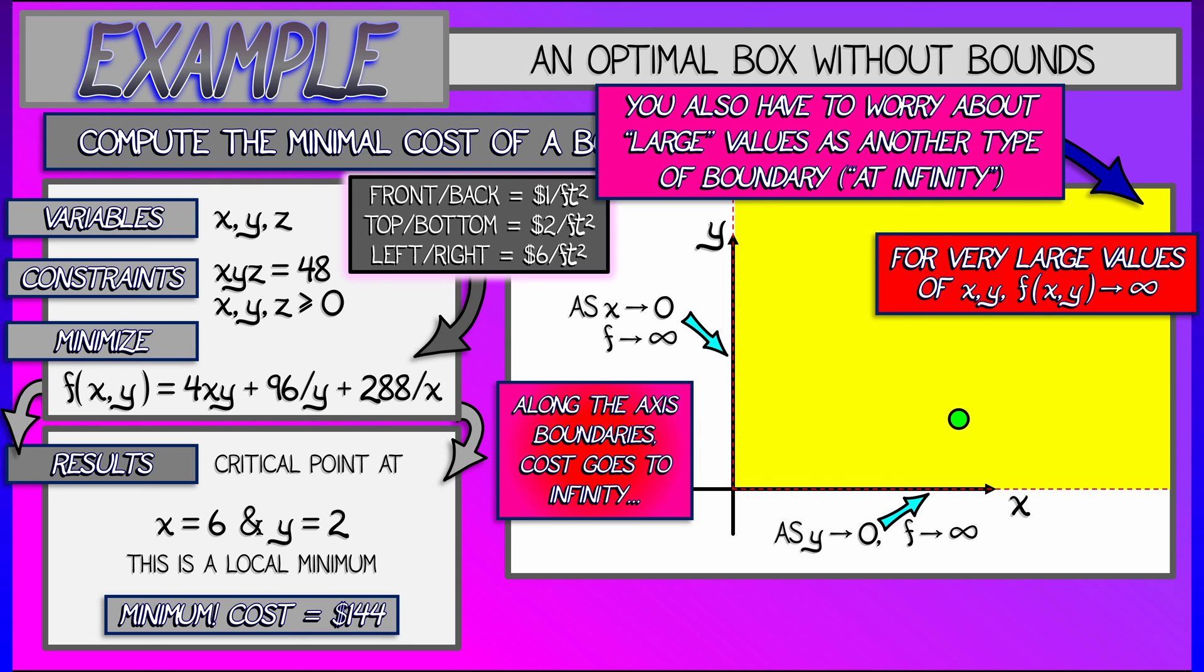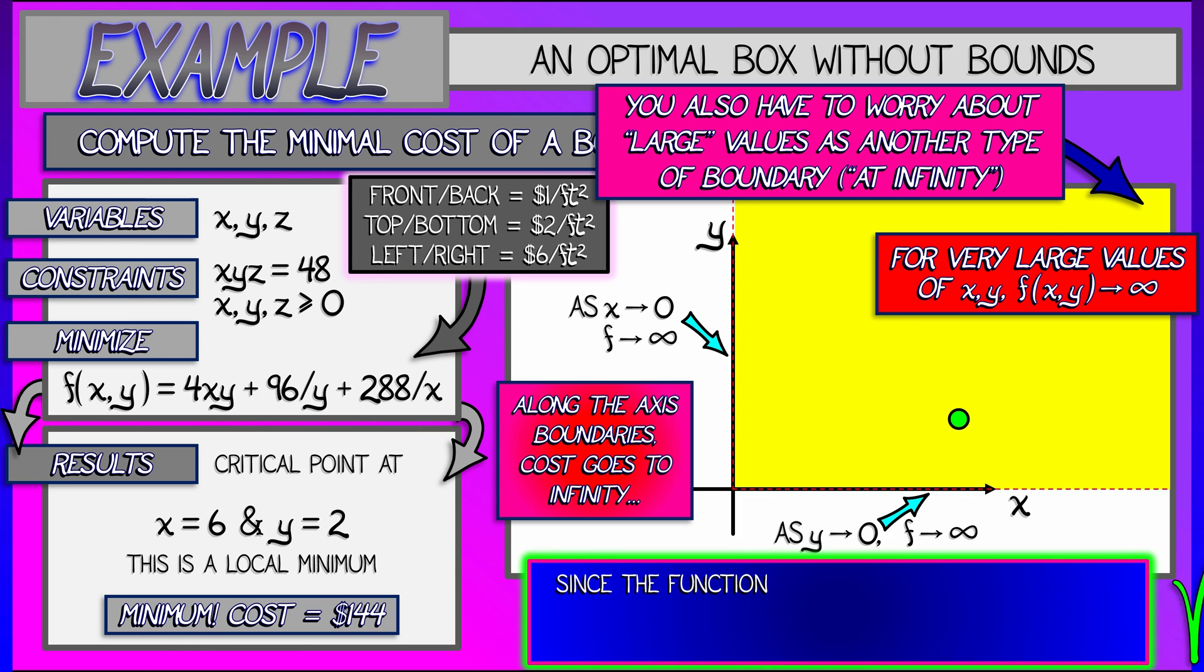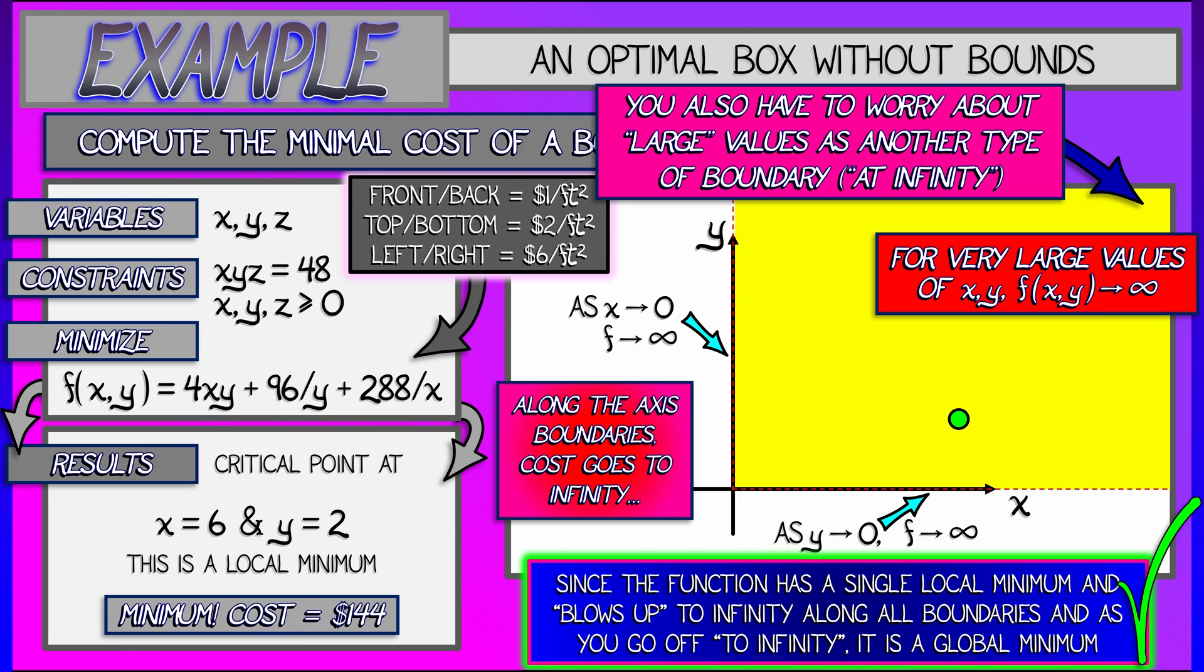You can see, I can see that for very large values of X and Y, the function is going to infinity. And because we have this single local minimum in the interior and the function blows up as you go out to the boundary or out to infinity, then this is definitely the global minimum and we have nothing to worry about. I merely bring up this example as one of those cases where you have variables going off to infinity. You do need to pay attention to what happens in that case.